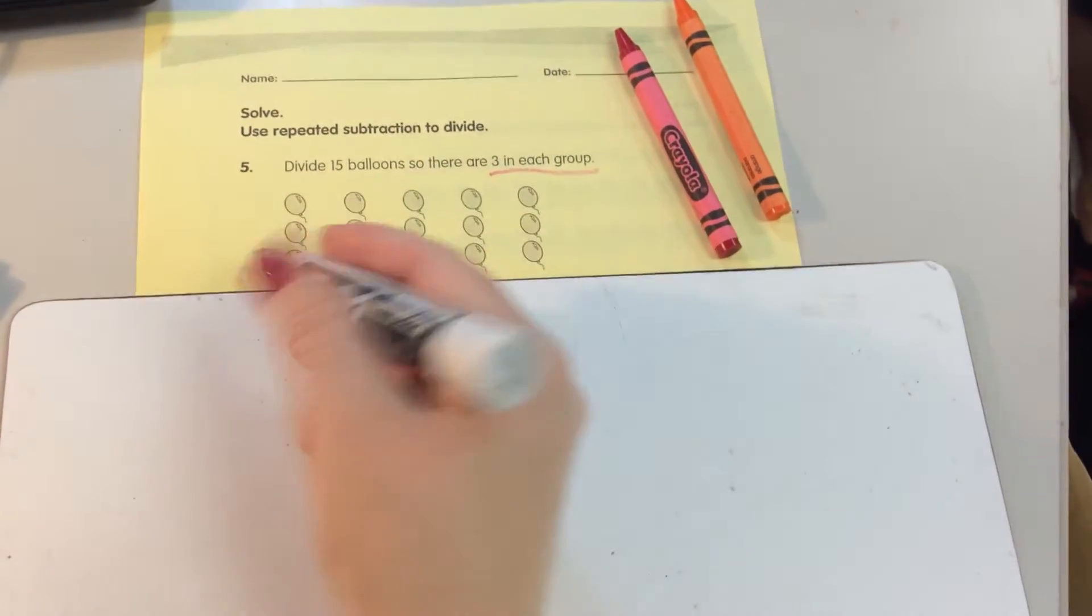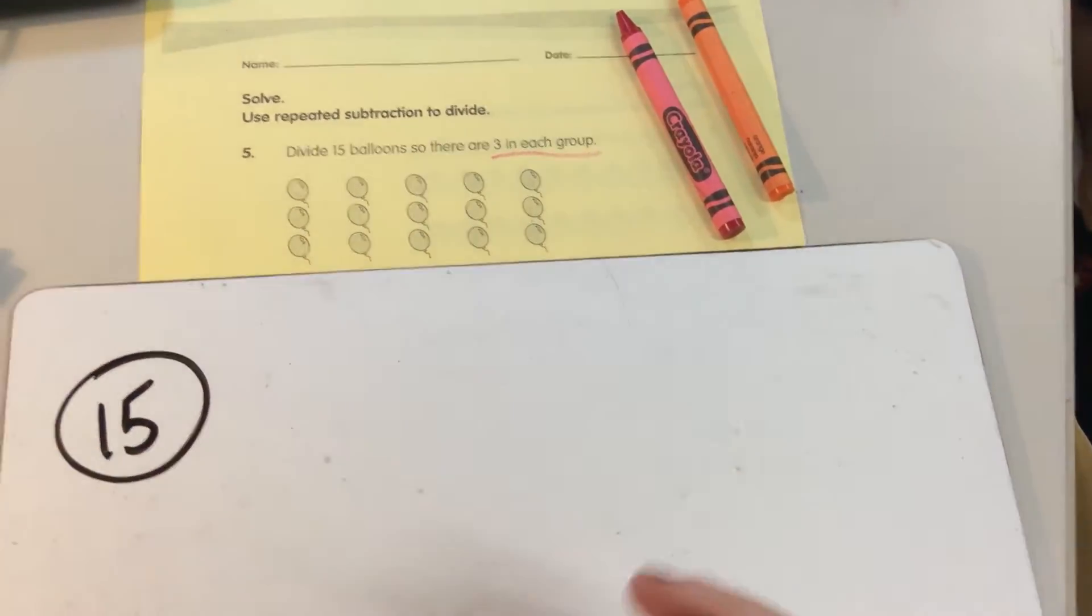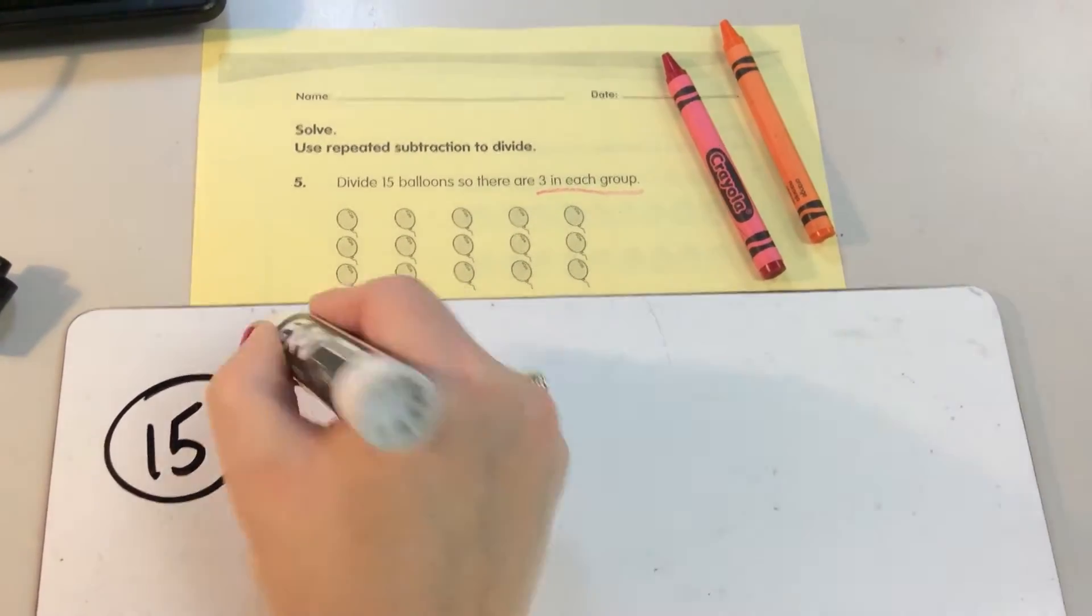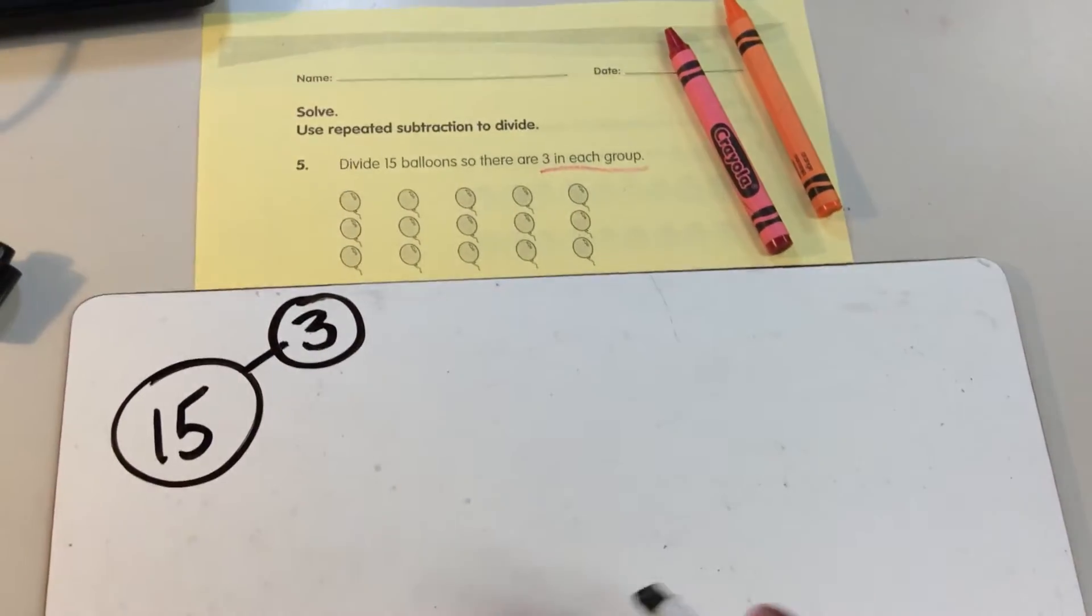Now, we know our whole, and our whole is 15, and we're thinking about what is it we know. Our whole is 15, and there's going to be 3 in each group. 3 in each part. We can say those groups are parts.